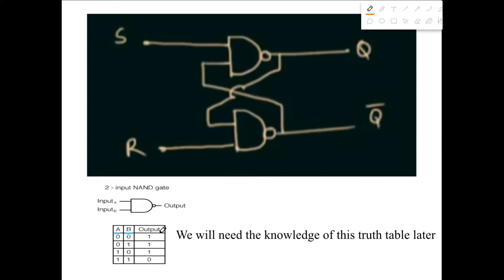Next, we're going to pick some random values in S and R — these are the inputs — and Q and Q prime are the outputs. Q is the main output and Q prime is the complement of the main output. Let's begin our illustration using S equals zero and R equals one. Since this is a NAND gate and at least one input is zero, we don't need to know the other input.